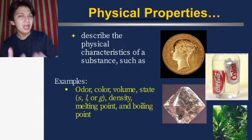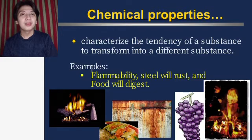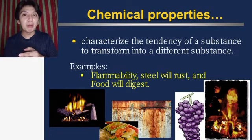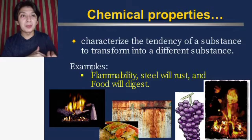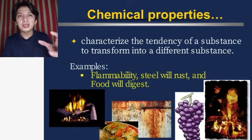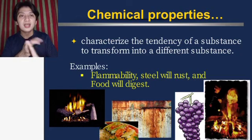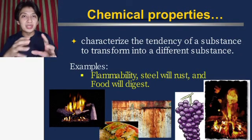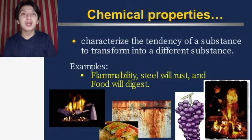Physical properties describe the physical characteristics of a substance such as color, odor, volume, state (solid/liquid/gas), density, melting point, and boiling point — things you can observe with your naked eye or five senses. For example, a coin's color is golden or bronze, it is hard and smooth. Chemical properties characterize the tendency of a substance to transform into a different substance — evidenced by things like steel rusting, food digesting, or wood burning.